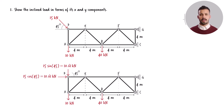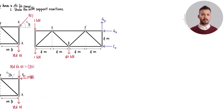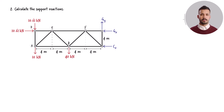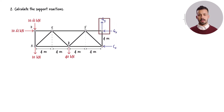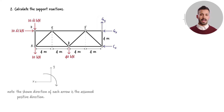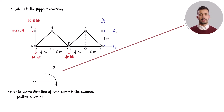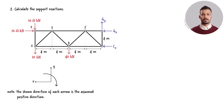To calculate the support reactions, we begin by sketching the complete free-body diagram of the truss. There are three support reactions: two forces in the X direction and one force in the Y direction. Since the axis directions in the coordinate system can be chosen arbitrarily, I will consider these directions as positive when formulating the equilibrium equations.